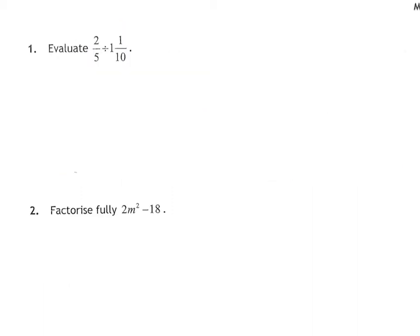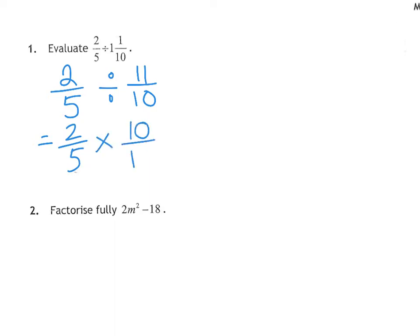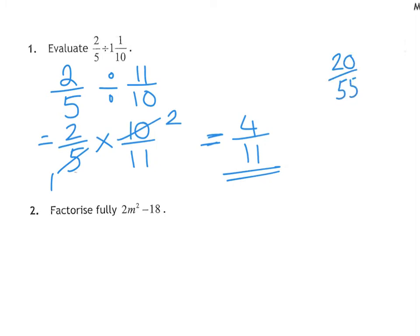Question 1 is dividing fractions. The number 1 rule with dividing and multiplying fractions is they have to be top-heavy first. I'm going to rewrite this sum as 2 fifths divided by — making that top-heavy — 1 would be 10 tenths with an extra 1, so 11 tenths. The rule with dividing fractions is keep it, change it, flip it. Keep the first one, change the sign, and flip the second fraction. You could multiply straight across to get 20 over 55, or cancel the 5s and 10s: dividing by 5 gives 2 and 1, leaving you with 4 over 11.